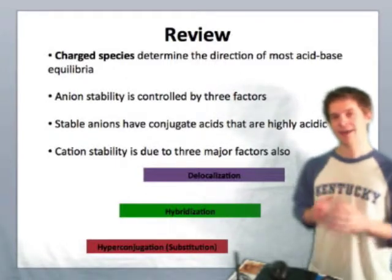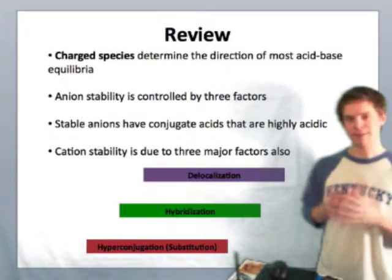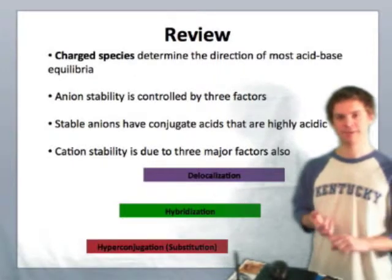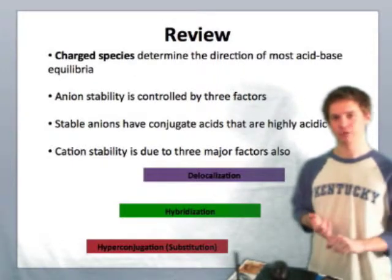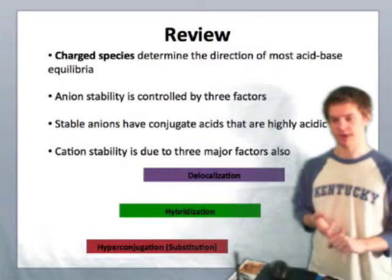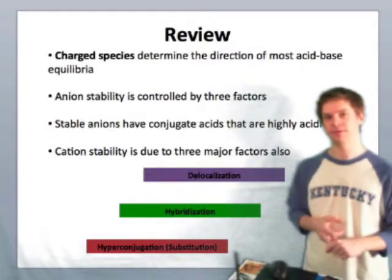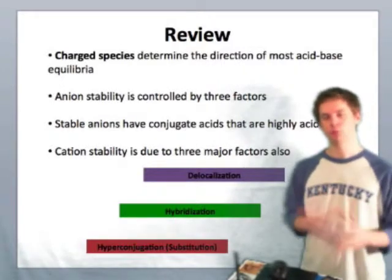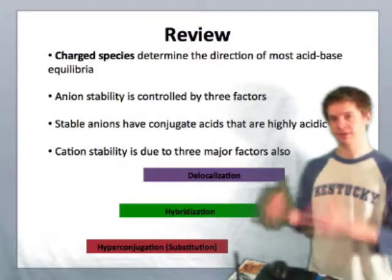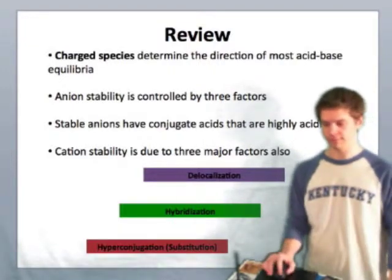Cation stability is what we're going to look at today, and it's due primarily to three factors: hybridization, delocalization, and hyperconjugation. In this lesson, we'll take a deeper look at these three factors and move on to talk about the processes of acidity and proton transfer in more detail.